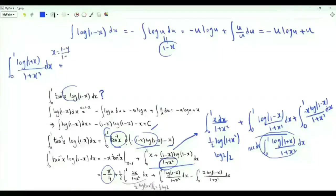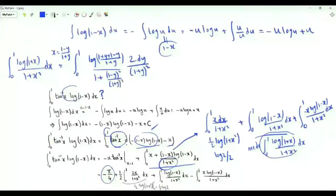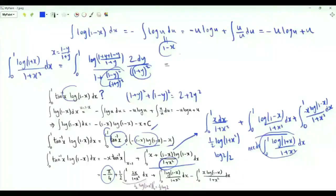Use the substitution x equal to (1 minus y) over (1 plus y). We get the integral from 0 to 1; the factor 2 over (1 plus y squared) appears, and log(1 plus x) becomes log of (1 plus y plus 1 minus y) over (1 plus y). Downstairs we have 1 plus (1 minus y)² over (1 plus y)². When we multiply through, the denominator becomes 1 plus y squared plus 1 minus y squared, which is 2 plus 2y squared. We obtain the integral from 0 to 1 of log(2 over (1 plus y)) over (1 plus y squared).